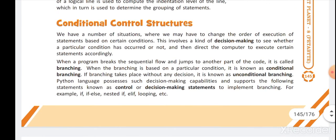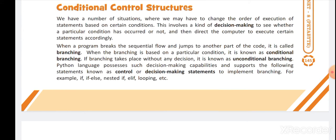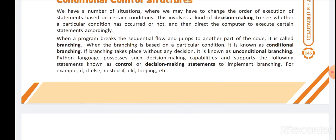Now we talk about conditional control structures. In Python programming, we have to take some decisions — we decide what happens when a particular condition comes to our computer and how to execute those statements. When our program leaves a sequential flow and jumps to another part of the code, it is known as branching.